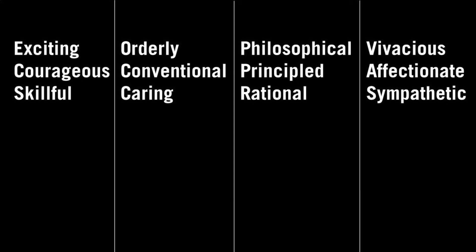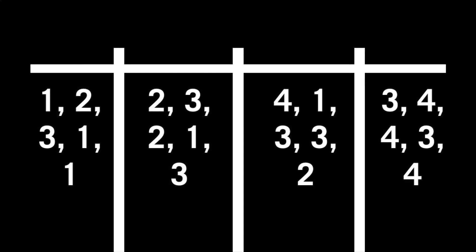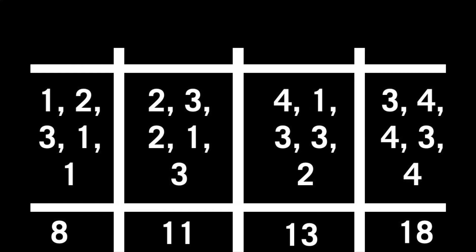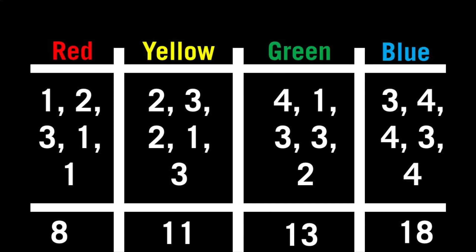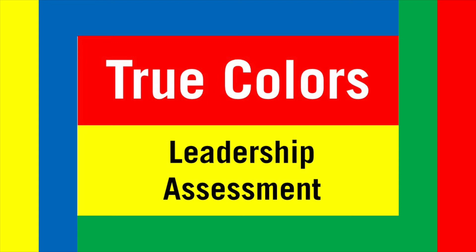Pause the video or go back if you're still assigning values to each group. If you've completed, add up the numbers. Once you have a total, write which color is for which column. The first group is red, the second is yellow, the third is green, and the fourth is blue. The column with the highest value — meaning you related to those groups the most — is your dominant color. If you tied, as we discuss the colors you can self-identify which is most like you. We're going to go color by color, so watch all of them, as we'll also discuss dynamics and how you work with people of different personalities.